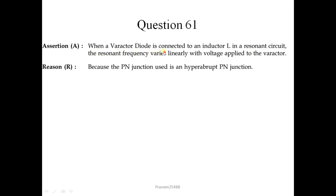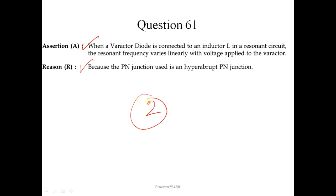Question number 61. When a varactor diode is connected to an inductor in a resonant circuit, the resonant frequency varies linearly with voltage applied to the varactor. This is a correct statement. The PN junction used is a hyper-abrupt PN junction — this is also correct but it is not the correct explanation of the assertion. So we will choose answer 2.